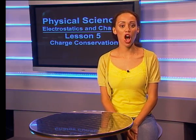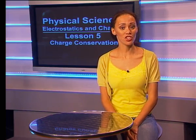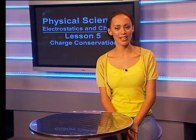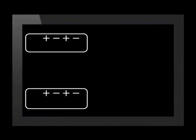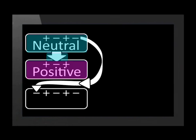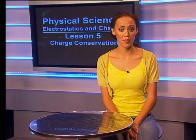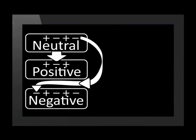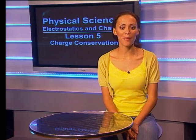Let's use some examples in which objects are charged and then discharged to understand charge conservation better. We already know that we can charge objects if we move electrons from one object to another. When we move electrons from a neutral object, the object becomes positively charged. The removed electrons can't disappear — they have to go to another object. If a neutral object receives these electrons, it becomes negatively charged. That is how objects become electrically charged.